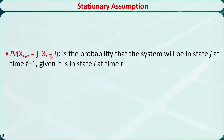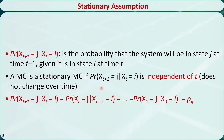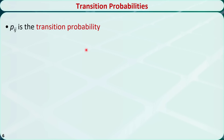This conditional probability represents the probability that the system will be in state j at time t plus 1, given it is in state i at time t. A Markov chain is called a stationary Markov chain if this probability is independent of time t. Since this probability does not change, we give it a shorter name: p_ij. p_ij is called the transition probability from state i at the previous time to state j at the current time.